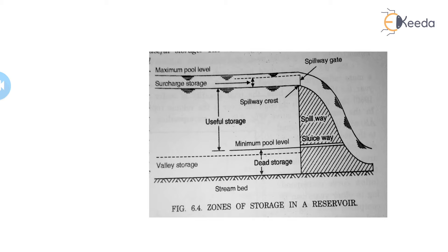The volume of water below the minimum pool level is known as dead storage. This storage does not give us any useful amount of water under ordinary operating conditions. It does not provide water for electricity generation or agricultural purposes, because the water is simply stored in this zone. Hence it is called dead storage.